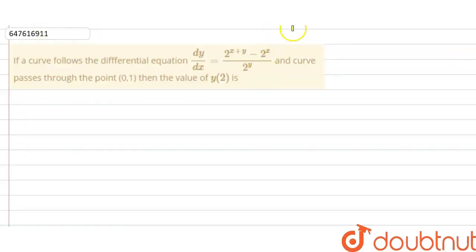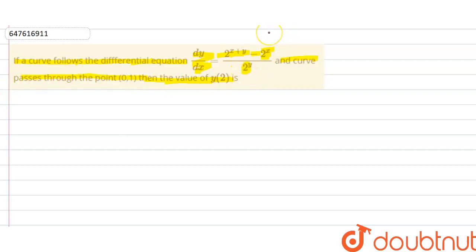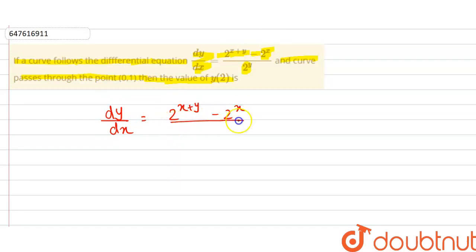Hello everyone. In this question, if a curve follows the differential equation dy/dx is equal to 2 raised to the power x plus y minus 2 raised to the power x, upon 2 raised to the power y, and the curve is passing through the point (0, 1), then find the value of y at x equals 2. The given differential equation is dy/dx = (2^(x+y) - 2^x) / 2^y.